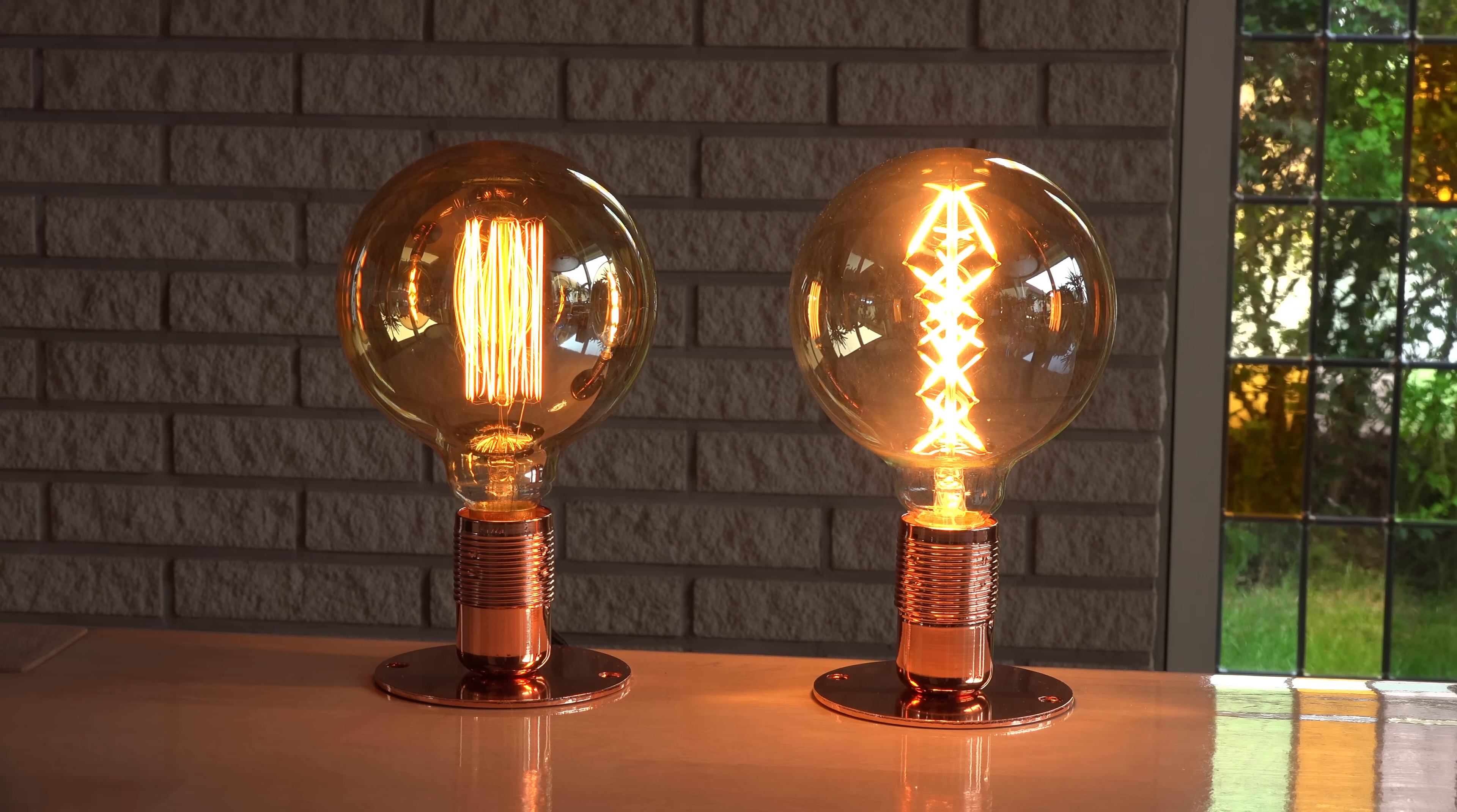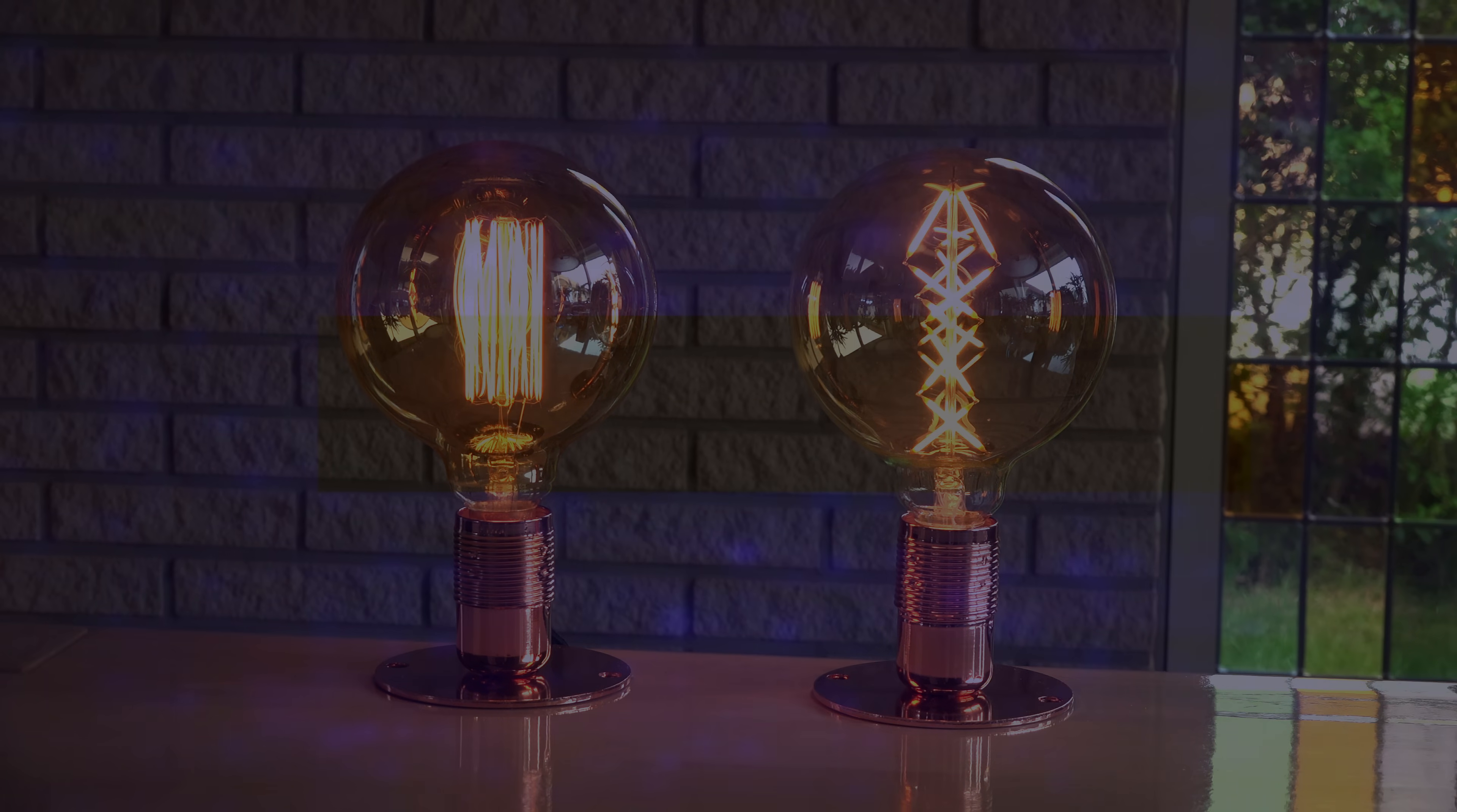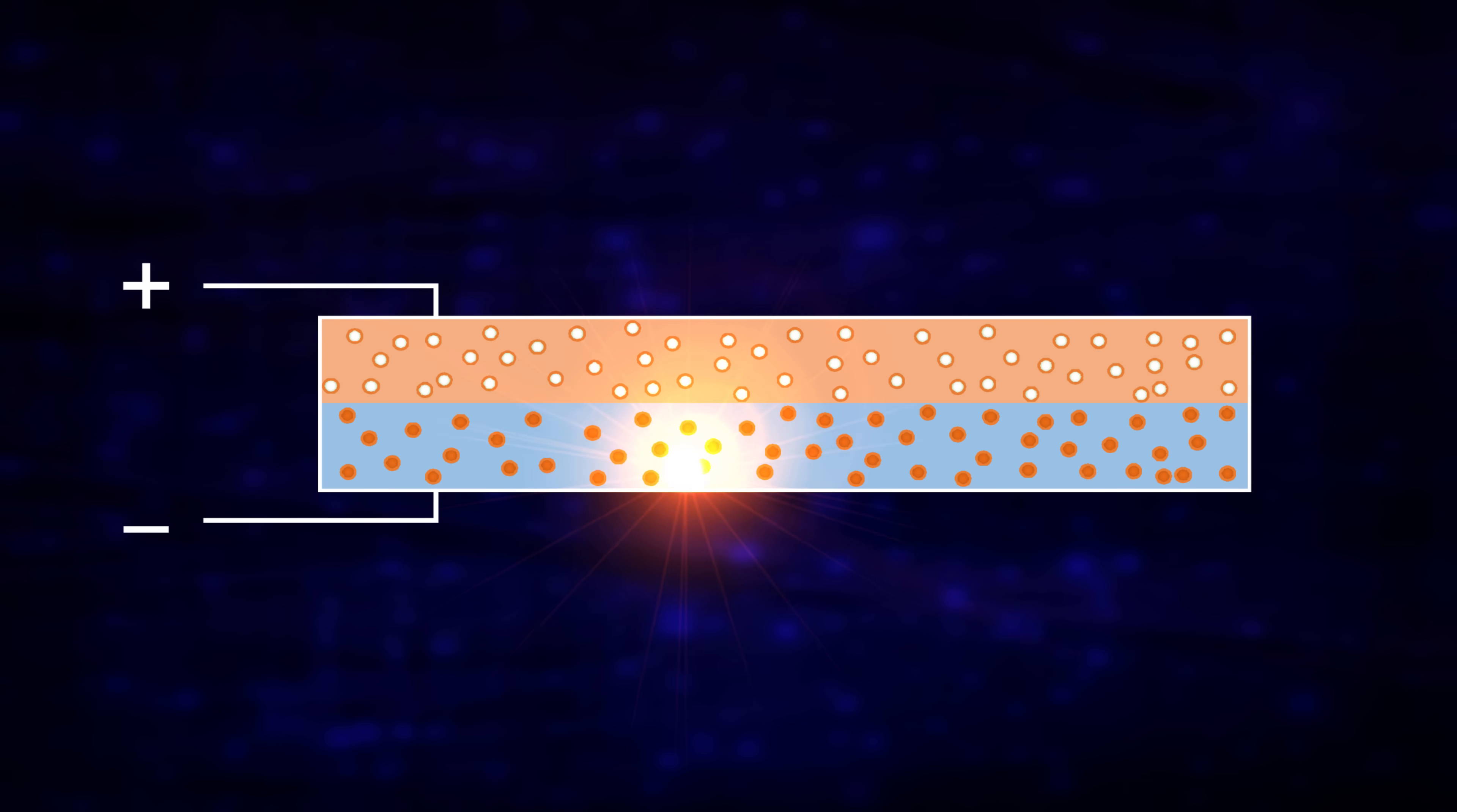LEDs on the other hand do not work by heating up a wire. Instead of incandescence LEDs emit light by electroluminescence. The light emitting diode is a semiconductor which has a negative side with electrons in excess and a positive side with holes missing electrons. When the right voltage is applied to the semiconductor electrons flow from the negative side and fill the holes on the positive side. This releases energy as light photons.